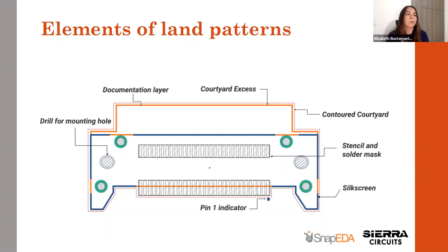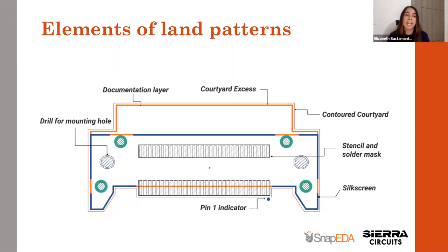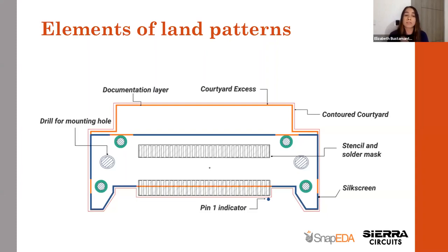Now let's talk about the basic elements of land patterns. First, we have the pin 1 indicator, also known as the post-assembly inspection dot. It is normally placed on the silkscreen layer, meaning it is visible after the assembly process. It helps verify that the component was assembled with the correct rotation. Then we have the silkscreen, also known as the legend layer, which basically serves as a reference indicator for placing components on your PCB.